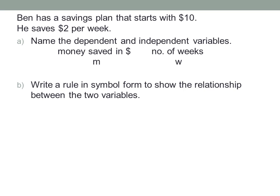So first let's choose a symbol to represent each of these variables. Let's use M for money and W for weeks. So what's my rule? The money saved, M, is equal to the ten dollars Ben starts with, plus two dollars per week. Each week he saves two dollars. After one week he saves two dollars. After two weeks, four dollars. After three weeks, six dollars. That's just two times the number of weeks. M equals ten plus two W.